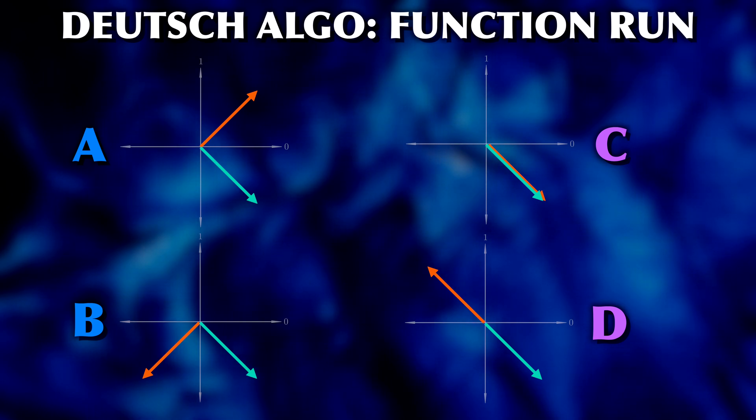If we were to simply measure the qubits now, we would find any combination of 0 and 1 with equal probability. So we would gain nothing.